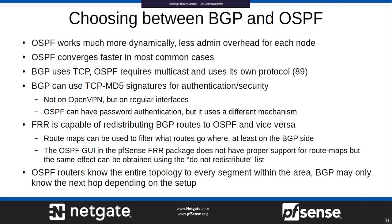OSPF is much more dynamic with less administrative overhead per node, especially on shared local segments. OSPF tends to converge faster in most common cases — partly because an OSPF routing table for a local network is much smaller than a BGP full feed. OSPF does tend to form adjacencies faster and notice link failures faster, though you can tweak timers in BGP to bring them closer.